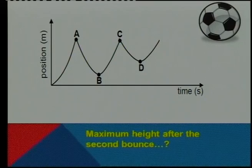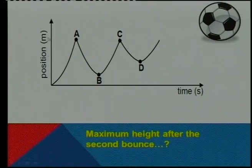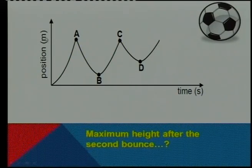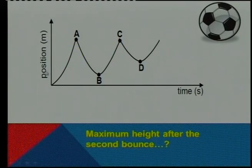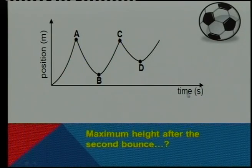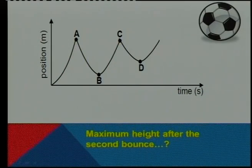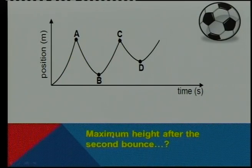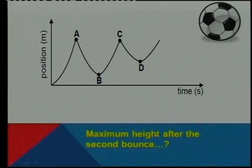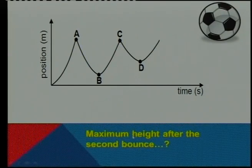First on, I want to go to a graph that was given in last year's paper, in the physics paper one, and it was in the multiple choice questions. The graph was a position which is in meters, your position from the origin, versus time graph, and the question that the examiner wanted to know was what is the maximum height after the second bounce.